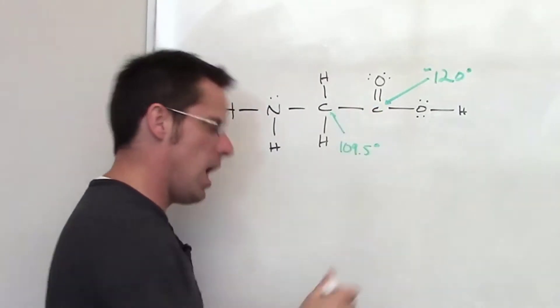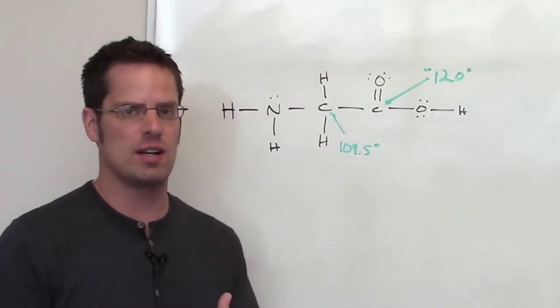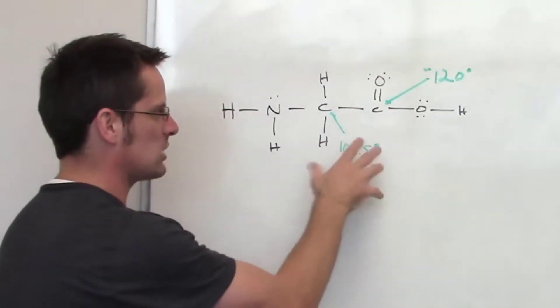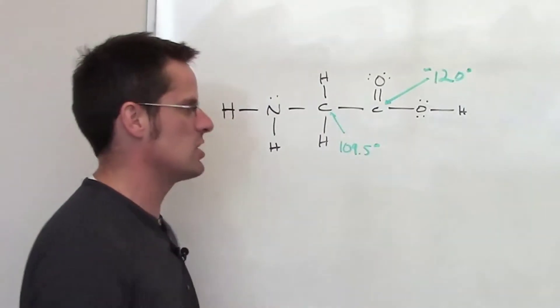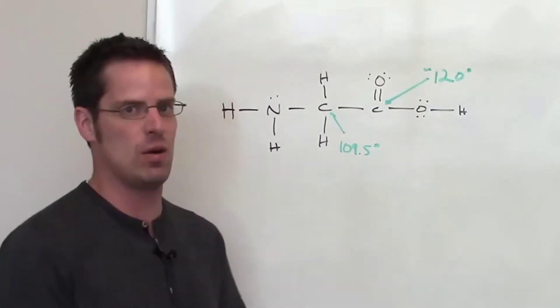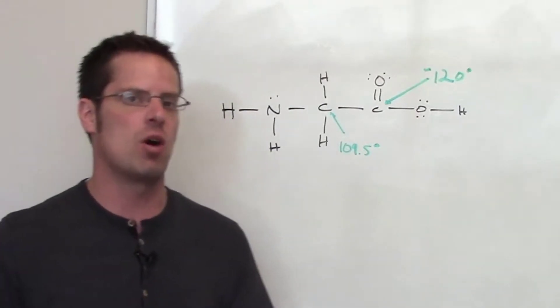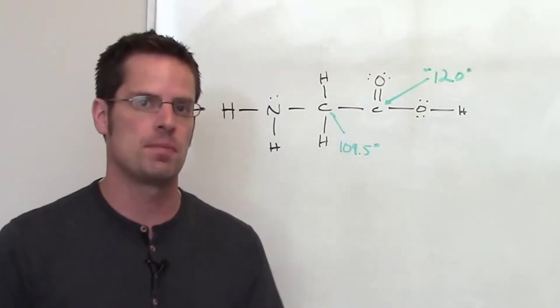it simple I guess, but the actual bond angles around each of these atoms is not necessarily 90 or 180. It corresponds completely to how many different things there are around each of those atoms, as we've talked about in earlier lectures on molecular geometry. The second question asks us how many total sigma bonds there are in glycine. Remember, everywhere...